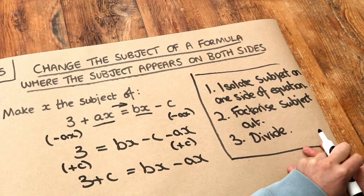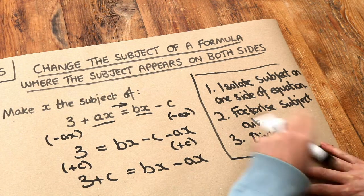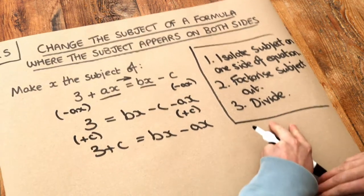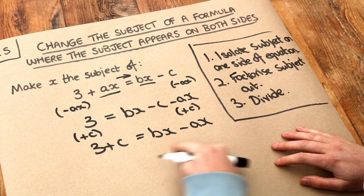And so we've done part 1 of the method. What about part 2? Factorize the subject out. So we just need to factorize the x out of this.